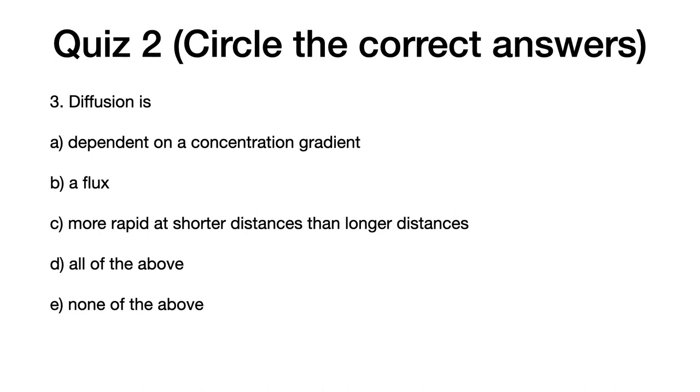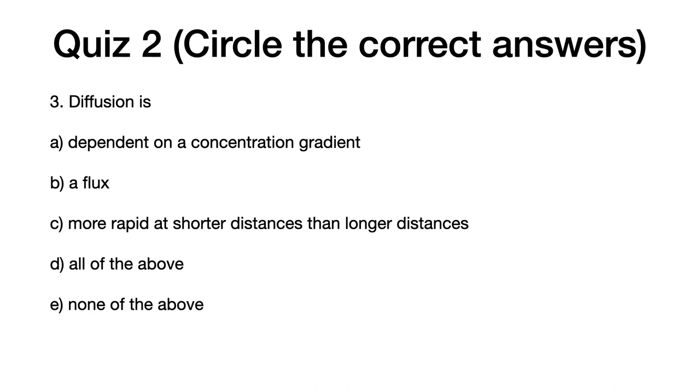Number three, diffusion is A. Dependent on a concentration gradient. B. A flux. C. More rapid at shorter distances than longer distances. D. All of the above. E. None of the above.